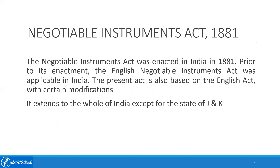Coming to the Negotiable Instrument Act of 1881, it was enacted in India in 1881. But before this act was enacted, we were already covered under the English Negotiable Instrument Act, which was applicable to the whole of India. The current Negotiable Instrument Act enacted in 1881 is also based on the English Negotiable Instrument Act, to which certain modifications were made. This NIA Act of 1881 extends to the whole of India, except for the state of Jammu and Kashmir.